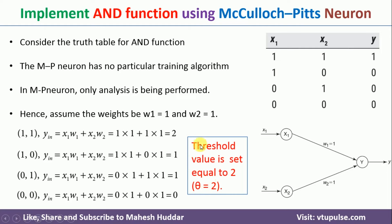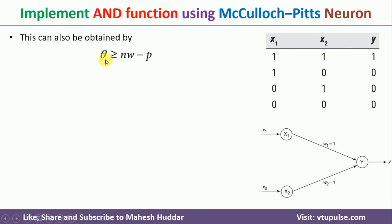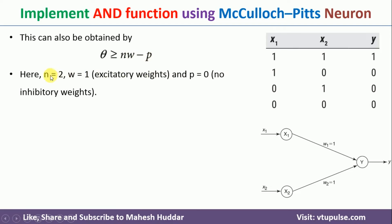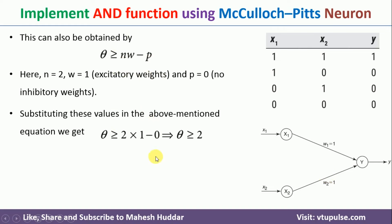This theta value can also be calculated using the formula: theta ≥ n·w − p. Here n equals 2 (two input neurons), w equals 1 (positive weight), and p equals 0 (no inhibitory nodes). Substituting these values gives theta ≥ 2, which confirms our result.